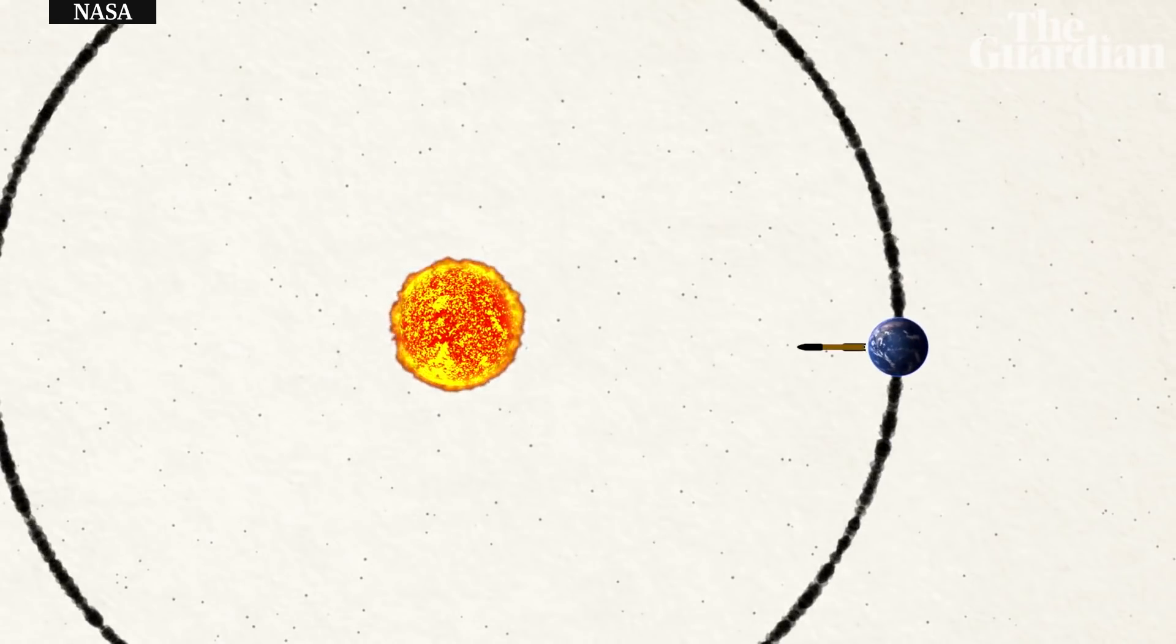If you launch a rocket from Earth straight toward the Sun, it won't lose that sideways speed, and so it will miss the Sun.